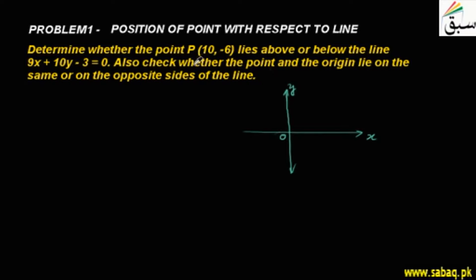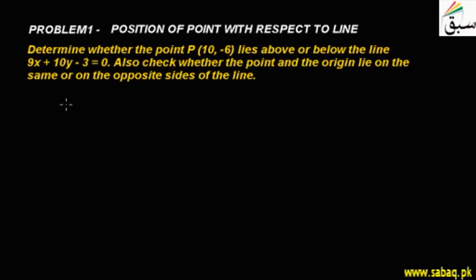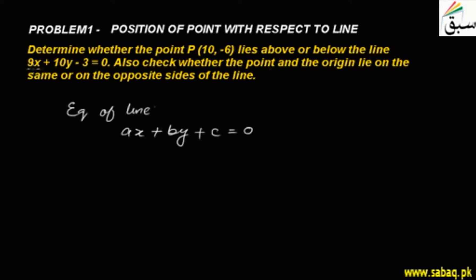We will test this question. What does it mean to be on the opposite or the same side? We can understand the technique using a graphical method — by drawing a graph — but also without a graph. The equation of a line in general form is Ax + By + C = 0. This given equation is in the same form.